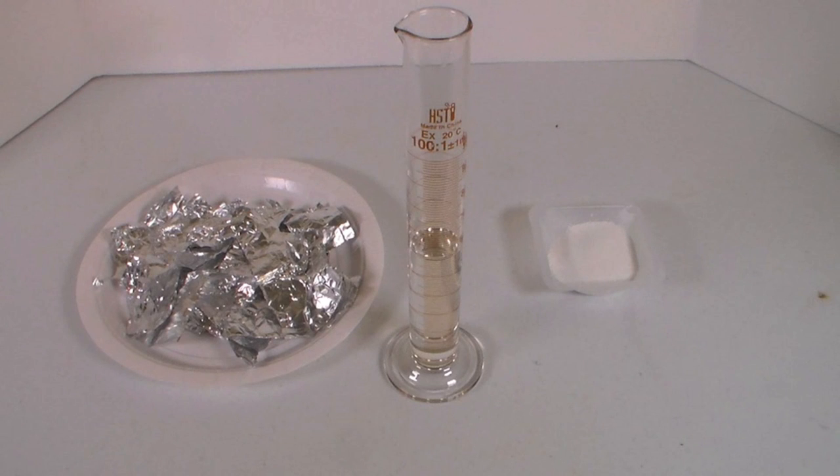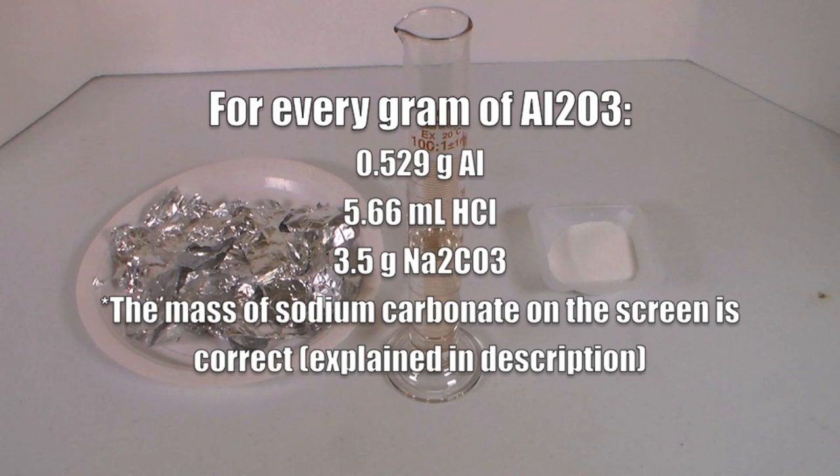For every gram of Aluminum Oxide you want to make, measure out 0.529 grams of Aluminum Foil, 5.66 milliliters of 31.45% hydrochloric acid, and 5.66 grams of sodium carbonate.